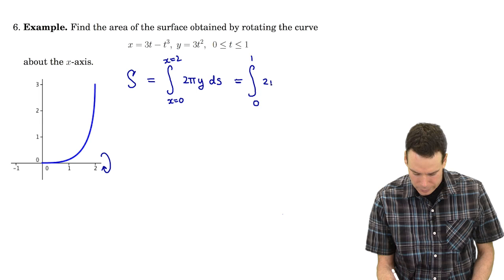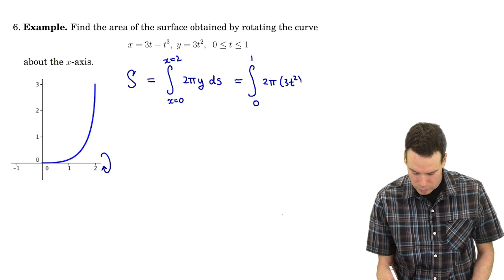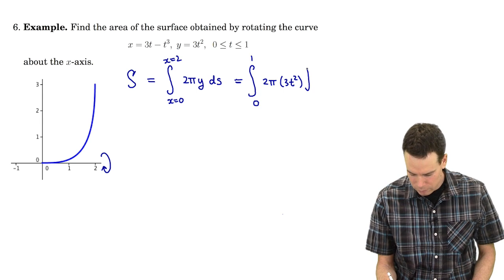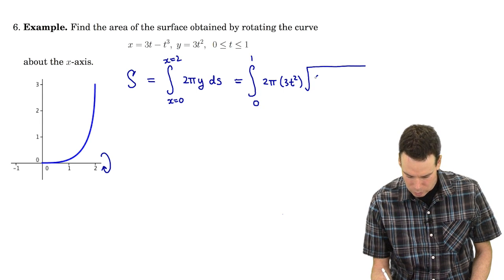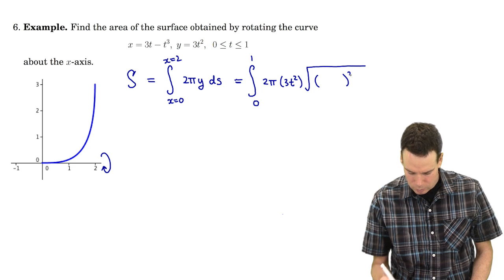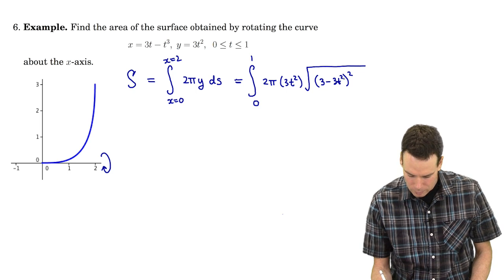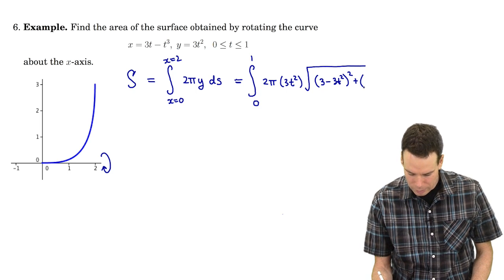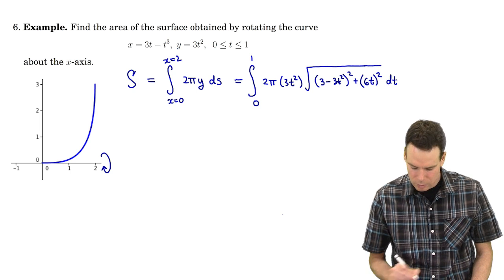2π times the y value, the y value is 3t². The arc length differential, that's the square root of the derivative of the x function squared. What's the derivative of the x function? That's (3 - 3t²) plus the derivative of the y function which is 6t, all squared times dt.